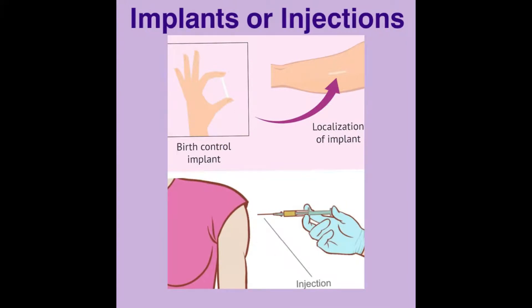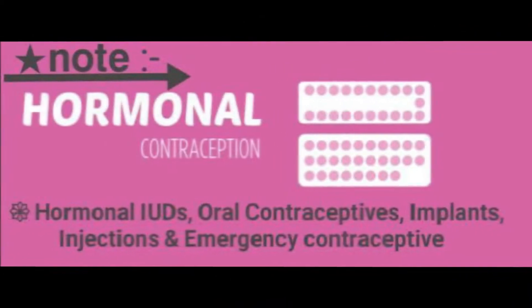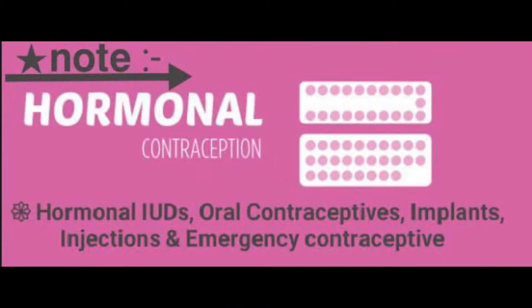Moving to the fifth method: implants or injections. They are very effective for a longer period and their mode of action is similar to oral contraceptives. Either we implant the body in the skin or take a hormonal injection. Note: hormonal IUDs, oral contraceptives, implants, injections, and emergency contraceptives are all hormonal methods of contraception.